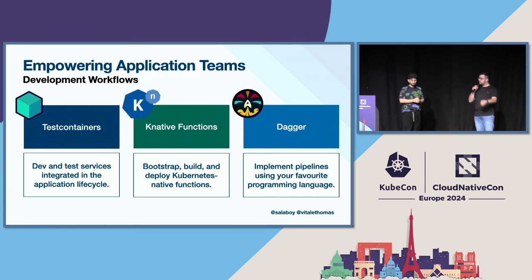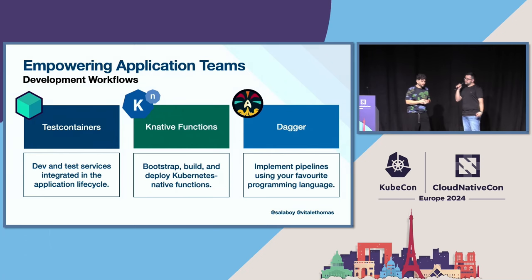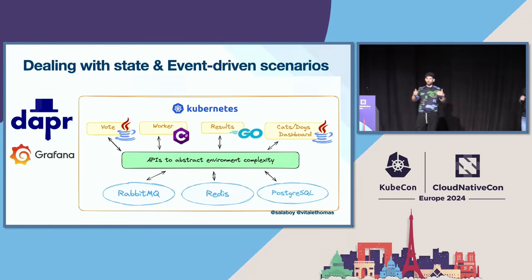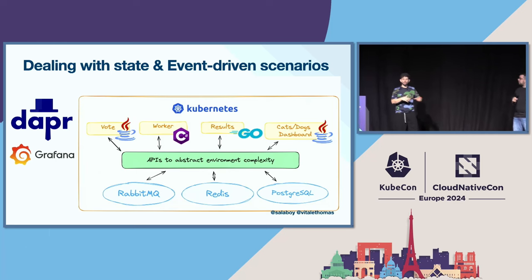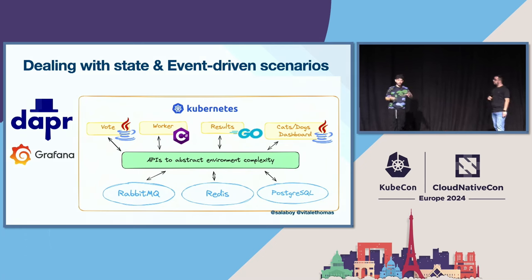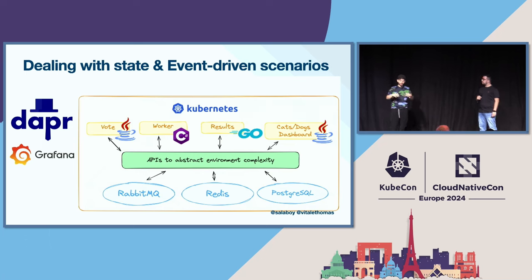At this point we have the onboarding phase done and developers are building their applications. But we still need to address the challenge of how we deal with state in a distributed system. We spent a lot of time talking about the separation between infrastructure and application code. The Dapr project gives you that separation of concerns between the infrastructure you're using and your application code.